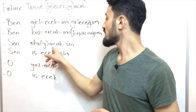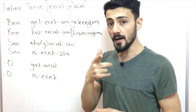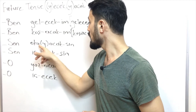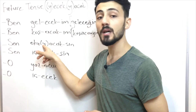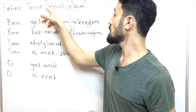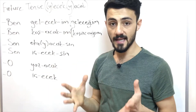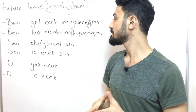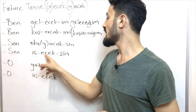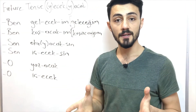Sen okuyacaksın. Do you remember — we don't put two vowels together, that's why we put a y sound here. Do you see the y sound here? You understand now. Sen içeceksin — you will drink.